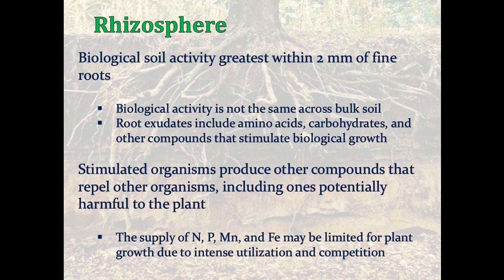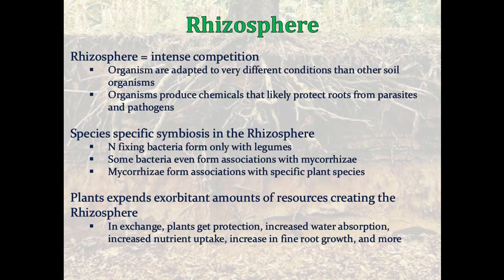Others could be harmful to the plant, so we want to ideally have the beneficial microbes in place. Some of our tree issues can come from harmful microbes, and so that requires some management intervention. The rhizosphere, because it's so specialized and there's a lot of nutrient exchange there, is also very competitive, but organisms there are adapted to these very specific, very different conditions and produce chemicals, most often protecting roots from parasites and pathogens — a beneficial relationship.